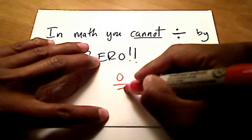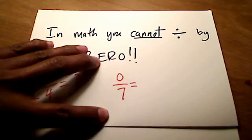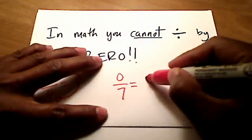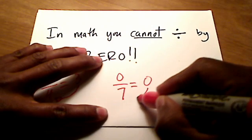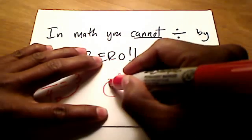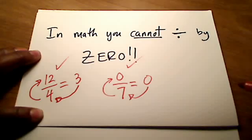Same thing here. If I showed you zero divided by 7, what's the answer? Zero divided by 7 is zero. Why? Well, if you multiply zero times 7, you get zero. These work, no problem here.